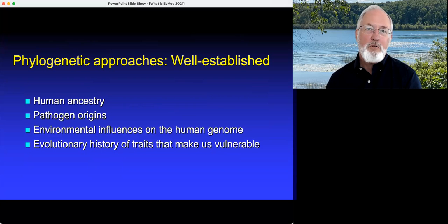Phylogenetic approaches are very well developed ever since the grand synthesis between genetics and evolutionary biology in the middle of the 20th century. We use them to trace human ancestry, to trace pathogen origins, especially with things like COVID, and environmental influences on the human genome, such as what happens when humans move to cold climates or when they're exposed to a plague. And finally, there's the especially interesting evolutionary history of traits that make us vulnerable. Comparative anatomy of the appendix, that kind of thing.